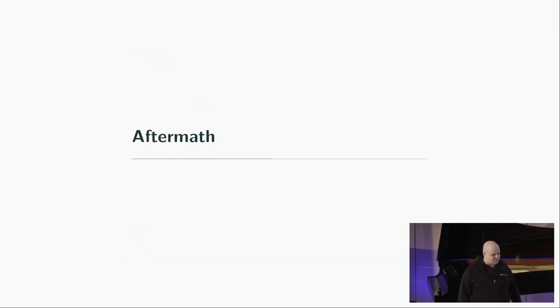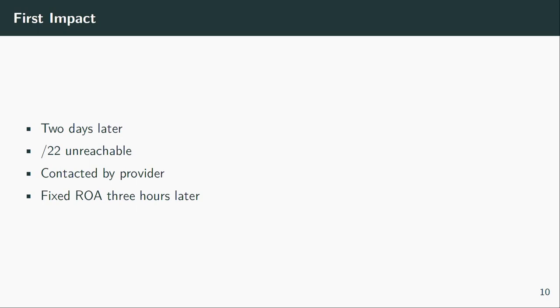It took a whole two days before the next thing happened. After two days, the first report came in that a /22 went unreachable. We were contacted by a provider — I think it was a Russian provider — who asked why their prefix couldn't reach our prefixes. Because it was a provider, it came directly to our network team, and we figured out quite soon that it was because of RPKI. We told the provider, and three hours later they had fixed their ROAs — the prefix went back to valid.